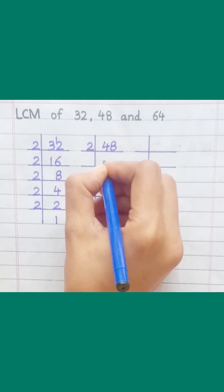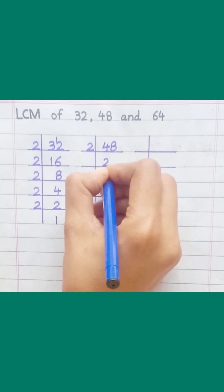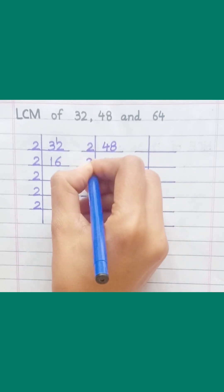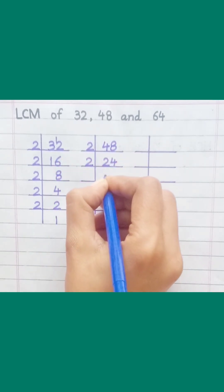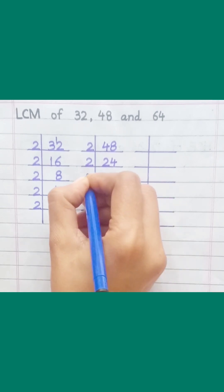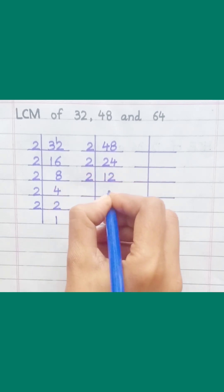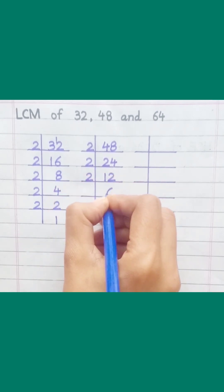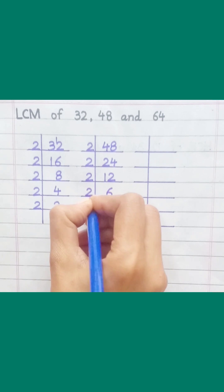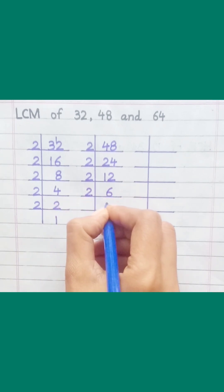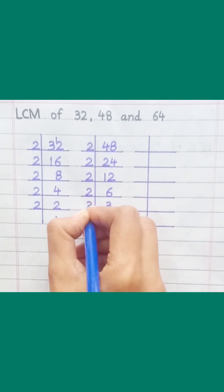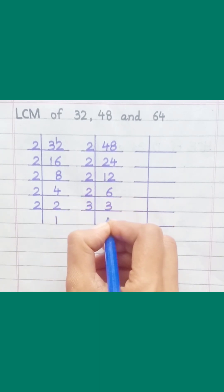48: 2 twos are 4, 2 fours are 8, 2 ones are 2, 2 twos are 4, 2 sixes are 12, 2 threes are 6, 3 ones are 3.